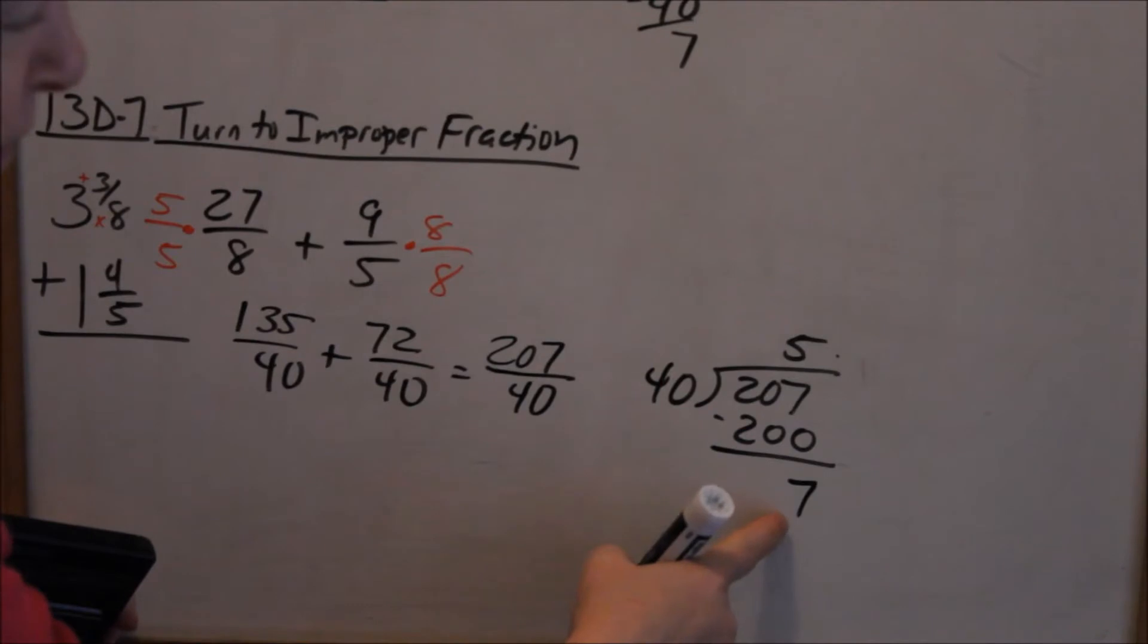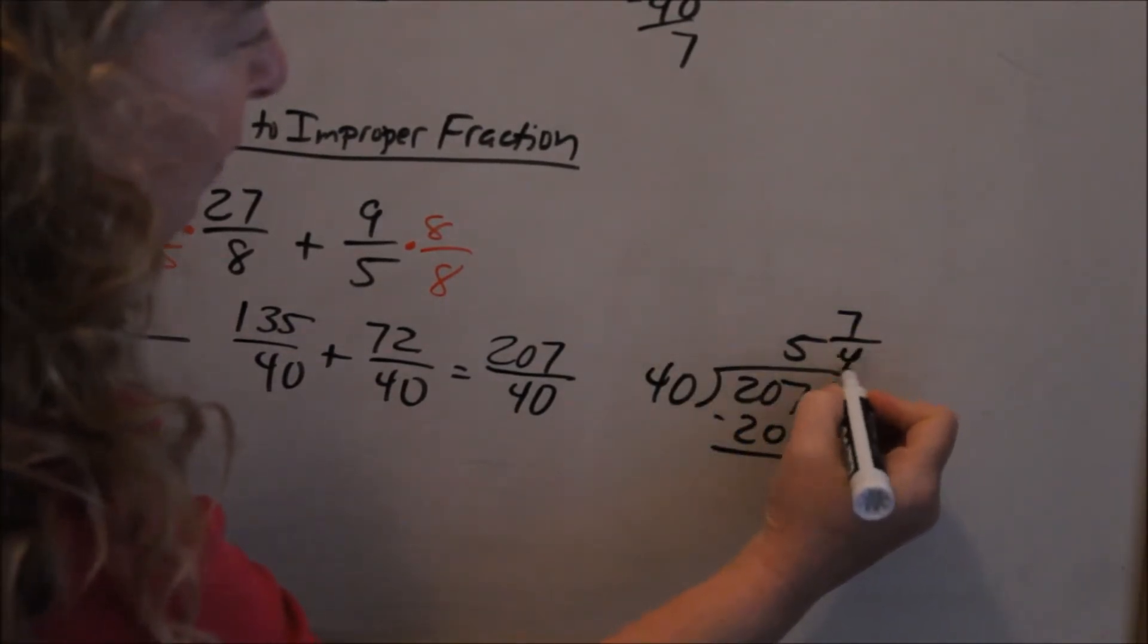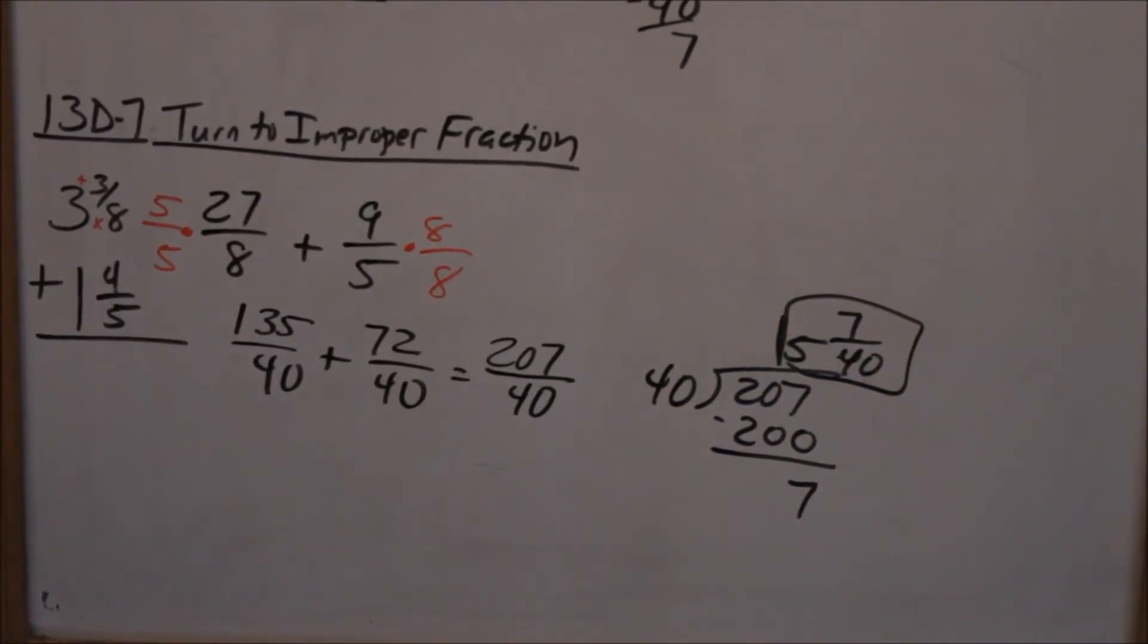Subtract, you get 7. So that becomes your new numerator, 7, and then 40, your denominator always stays the same. So 5 and 7 fortieths, which is the same answer we got before.